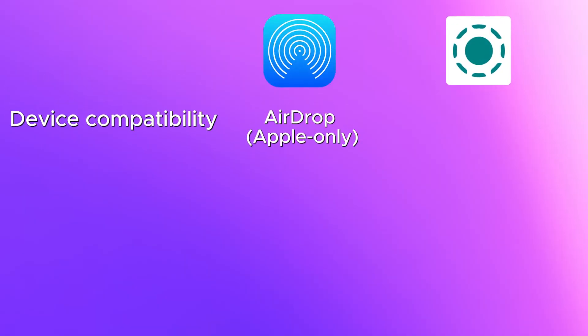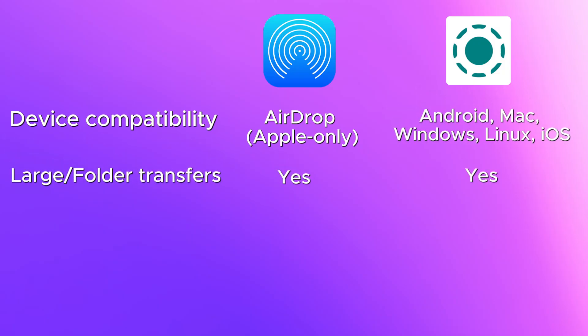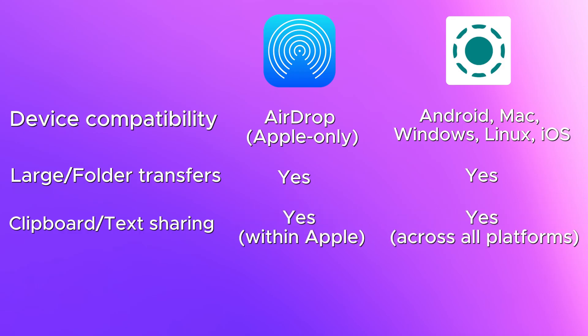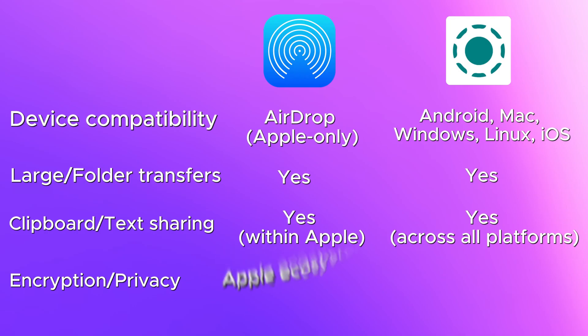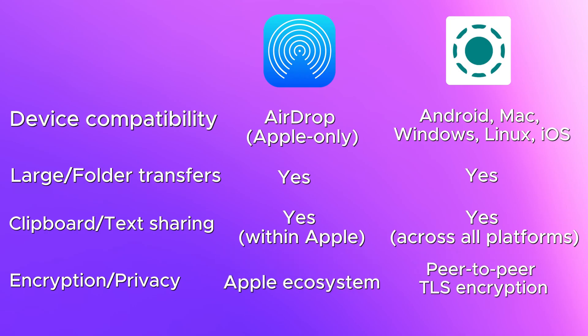Did you know about this already? Let me know in the comments. I've tried different types of apps but this is the best — no stress, super quick. Let's compare side by side: Compatibility — AirDrop is iOS and Mac only; LocalSend supports Android, Mac, Windows, Linux, and iOS. Large folders — both can do the same. Clipboard — AirDrop within Apple only; LocalSend across all platforms. Encryption — AirDrop uses Apple's ecosystem; LocalSend uses peer-to-peer TLS encryption. Internet needed — neither requires it. Setup — AirDrop is pre-installed on Apple; LocalSend took me about 30 seconds to install, and you can keep it on your desktop.